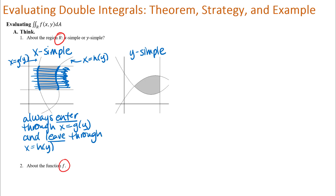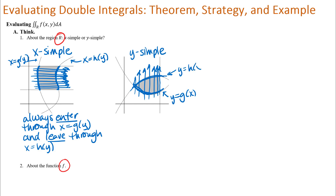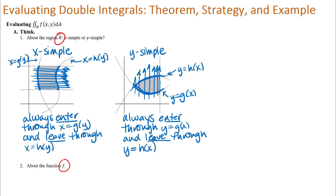The next region is called y-simple because when you go through that region in the direction of increasing y — thinking about the whole region including the ends, not just one pass — you're always entering through the same curve, y equals g of x, and always leaving through the same curve, y equals h of x. So you need to classify what kind of region you have.